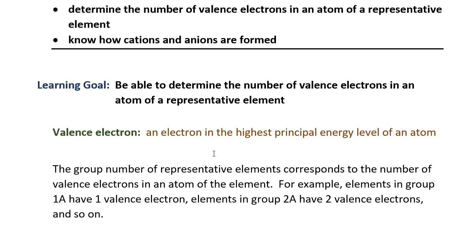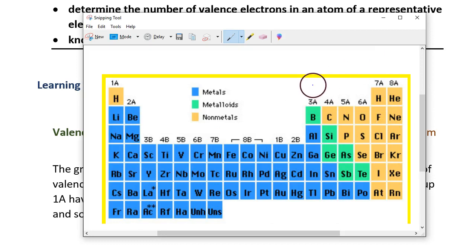Noble gases have a full outer energy level, so noble gases will have eight valence electrons. A valence electron is an electron in the highest principal energy level of an atom. You can determine the number of valence electrons for atoms by using the group number, which is written at the top of the columns. For example, elements in group 1A have one valence electron, elements in group 2A have two valence electrons, and so on. All of the elements in group 3A have three valence electrons — three electrons in the highest principal energy level.